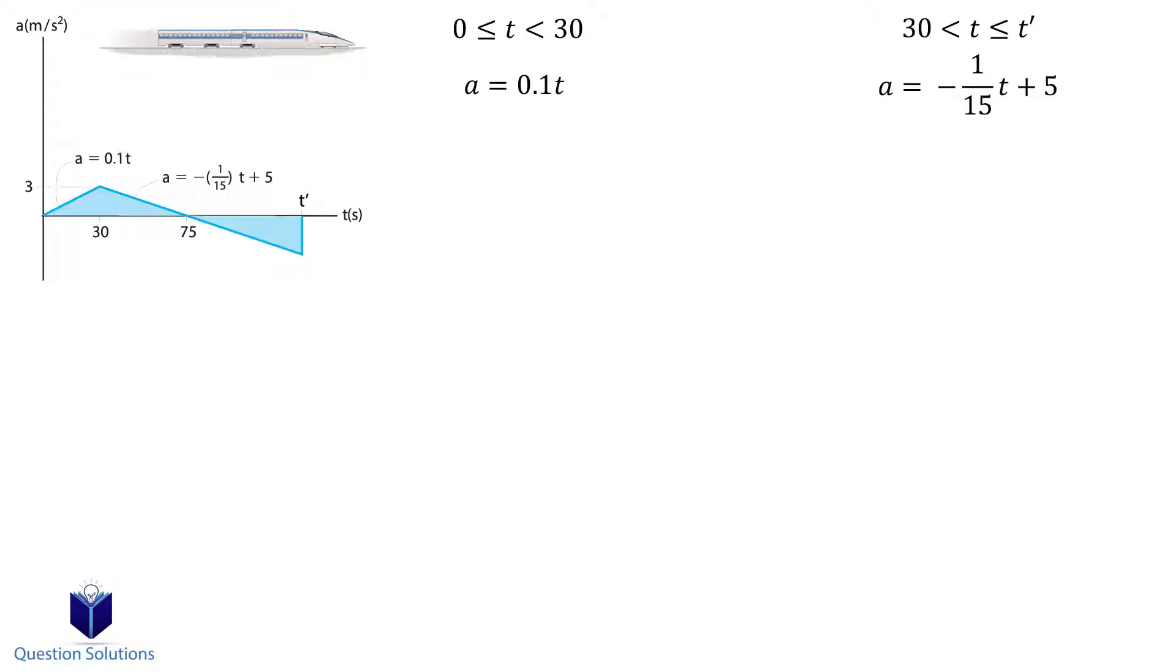Now we need to find the velocity, and to get the velocity from an acceleration equation we need to remember that acceleration is equal to the derivative of velocity with respect to time. We can also write it as dv is equal to a dt. Now it's just a matter of taking the integral to figure out the velocity. The train starts from rest at a time of 0, so those will be our lower bounds of integration. When we solve our integral we get v equals 0.05 t squared.